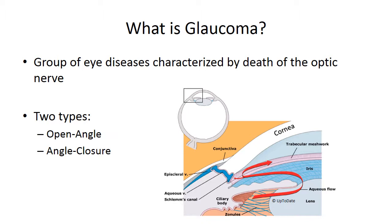The second type is angle-closure glaucoma, which is a narrowing or closure of the anterior chamber angle. Aqueous humor egress is blocked, but the dramatic elevation in IOP occurs over hours, compressing the optic nerve and leading to irreversible blindness if left untreated. Acute angle-closure is an ophthalmic emergency, and patients will be recognized by severely elevated intraocular pressures, a hard and excruciatingly painful eye, redness of the eye, and halos in their vision from corneal edema or thickening.